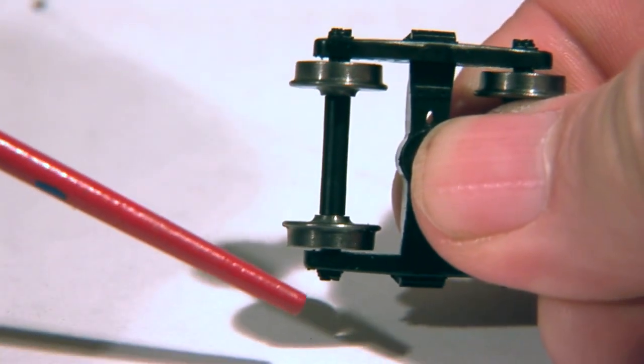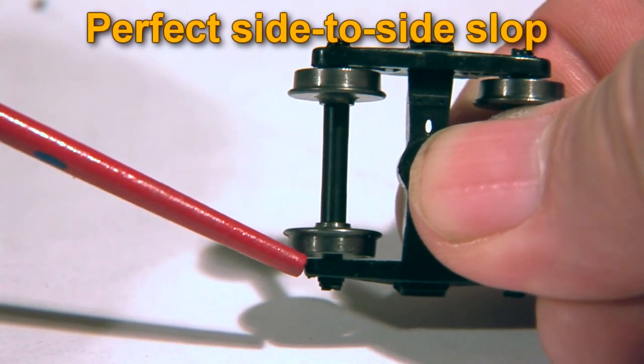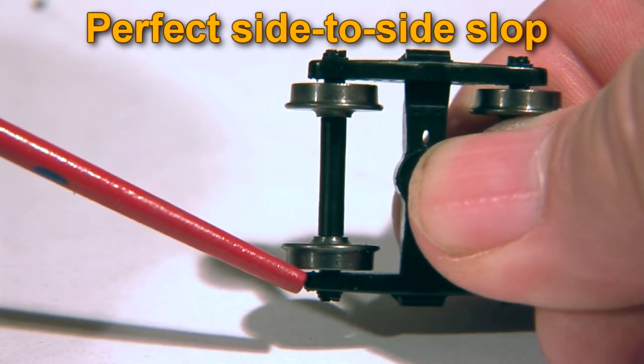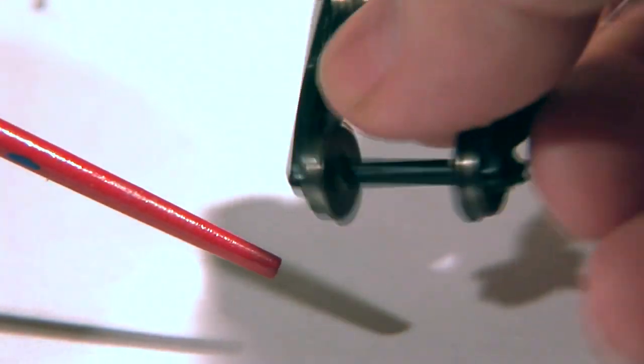You want just a slight amount of slop, about a half a flange width, so the wheels roll freely. The side-to-side slop in this truck is perfect.